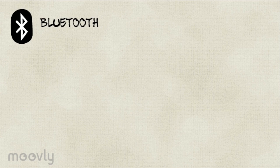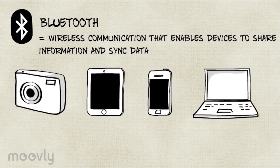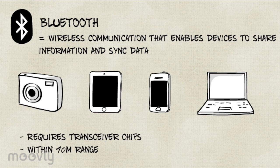Next is Bluetooth. Bluetooth is wireless communication that enables devices to share information and sync data. The devices require transceiver chips and they must be within about a 10 meter range.